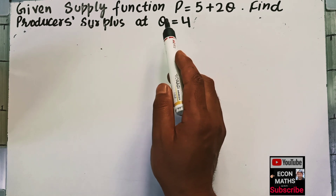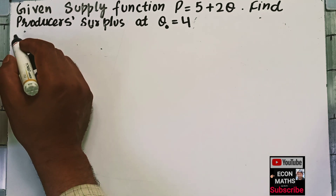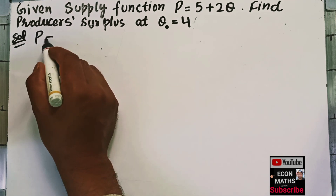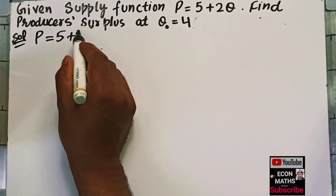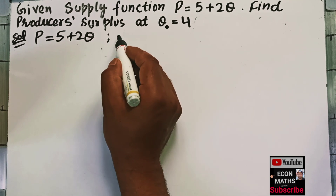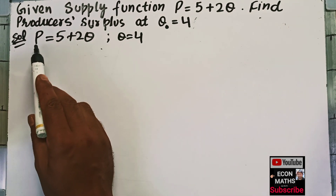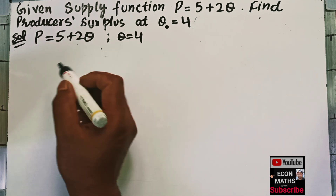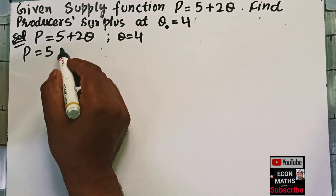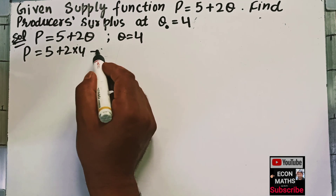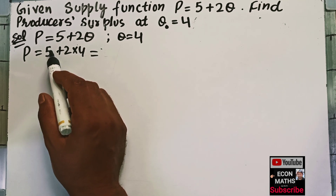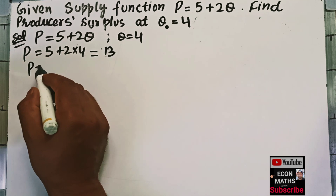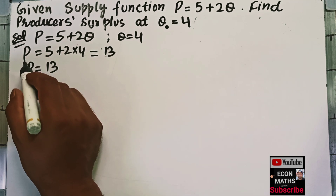The equilibrium quantity is given as 4. First, we will use the supply function P = 5 + 2Q. Since Q = 4, we substitute to find P: P = 5 + 2 × 4, which gives P = 5 + 8 = 13.